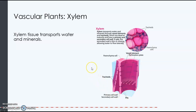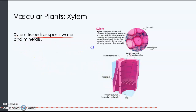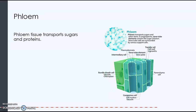In vascular plants, we have vascular tissue, and vascular tissue consists of xylem and phloem. Xylem tissue transports water and minerals of the plant from the roots to the shoots. Phloem transports sugars and proteins that are produced in the leaf of the plant, primarily because they're produced by photosynthesis and other chemical reactions.